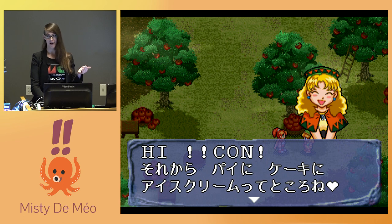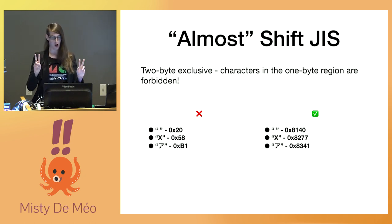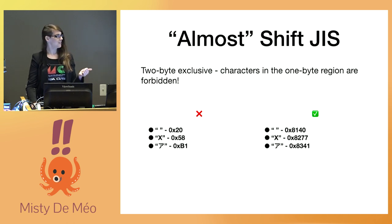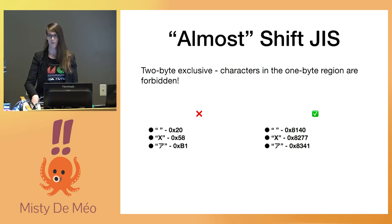The game also happened to contain an uppercase English font, so we can try replacing some text just to see what happens. Now, I said it was almost ShiftJIS — they decided to simplify things by making it no longer a multi-byte variable-width encoding; it's always two bytes. Luckily, every character in the one-byte region of ShiftJIS also has a version in the two-byte region, so you don't actually lose the ability to represent any characters by dropping the one-byte form. This makes the text rendering routine a little easier — instead of reading one character and figuring out if you need another byte, you can always read exactly two bytes in your text rendering loop every time.